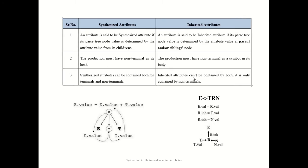The third difference is that synthesized attributes can be associated with both terminals and non-terminals. As seen in the example, E.value = E.value + T.value — here E and T are non-terminals and plus is a terminal, so a combination of terminal and non-terminal is possible. However, in inherited attributes, considering E → TRN, R is getting value from its sibling T as well as from N, so both should be non-terminals. Therefore, inherited attributes can only be contained by non-terminals.